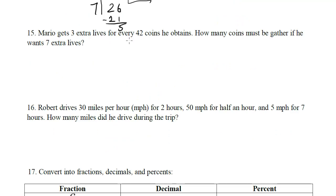Mario gets 3 extra lives for every 42 coins he obtains. How many coins must he gather if he wants 7 extra lives? This is a proportion question. It's 3 lives for every 42 coins, so we'll set up 3 lives for every 42 coins.